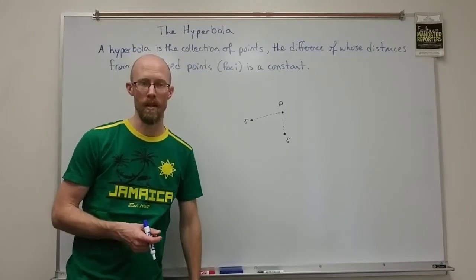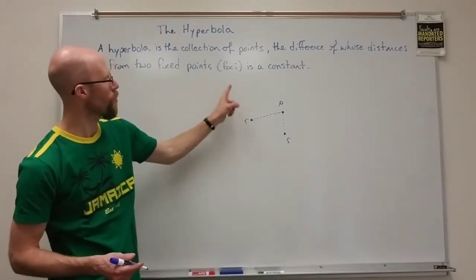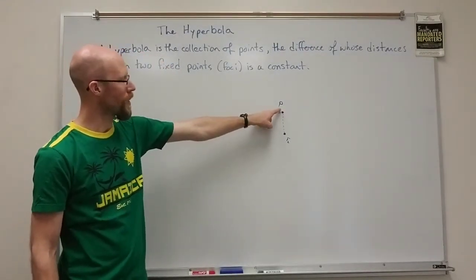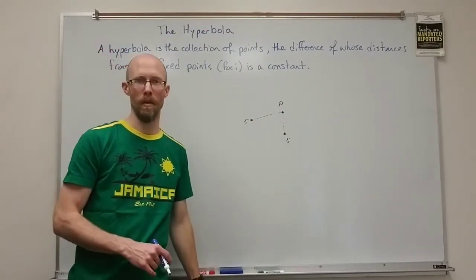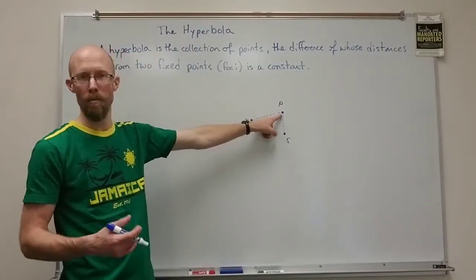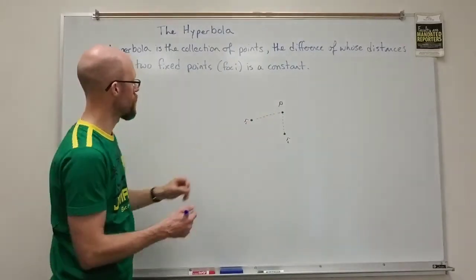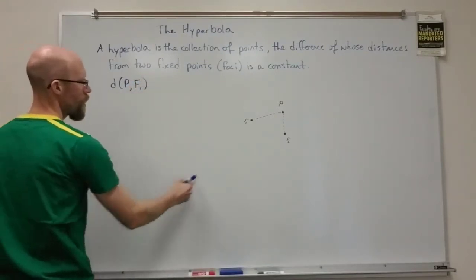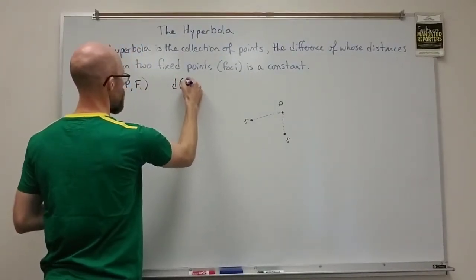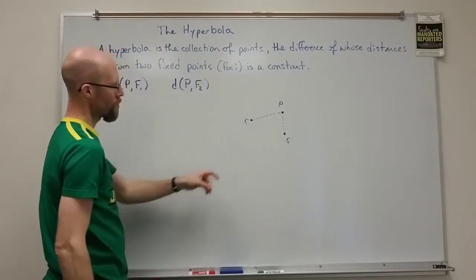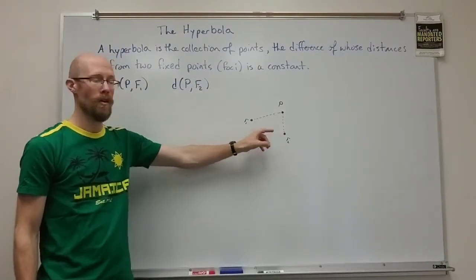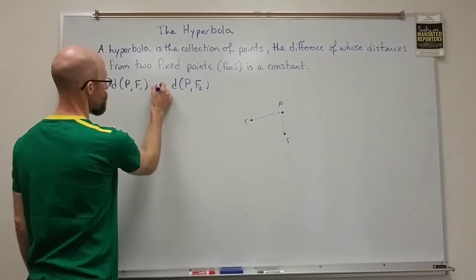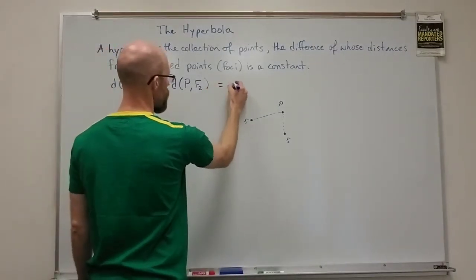Let me illustrate what that means. You have two fixed points we call the foci — F1 and F2, which we've seen before. If P is on the hyperbola, you have the distance from P to F1 and the distance from P to F2. The difference between those distances has to be constant.